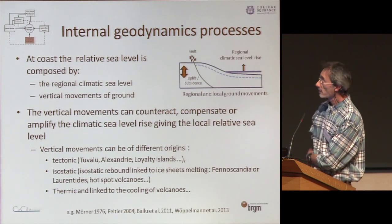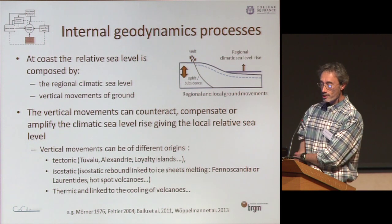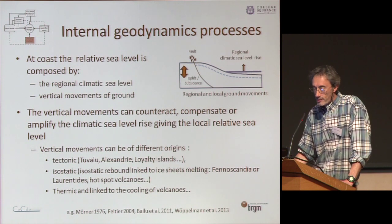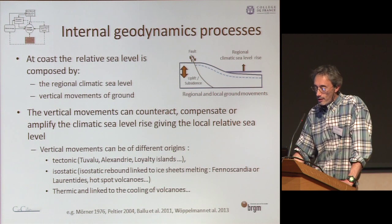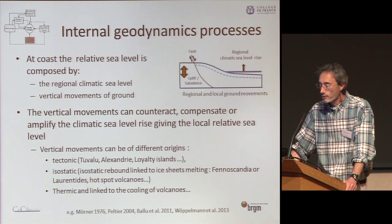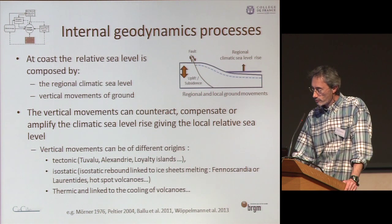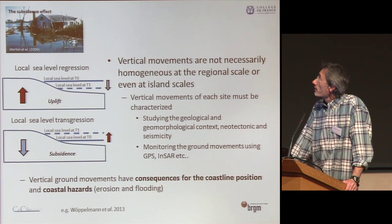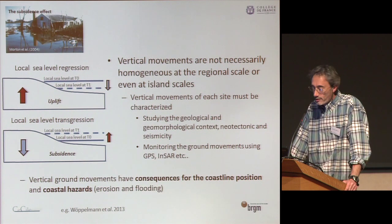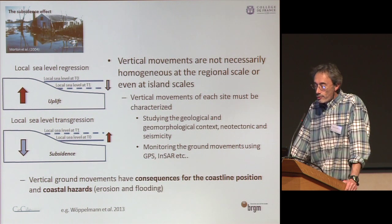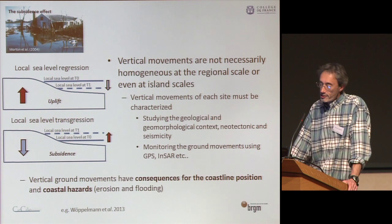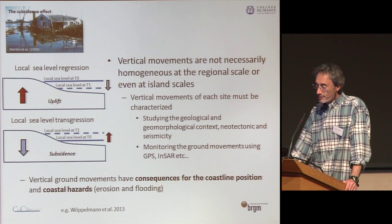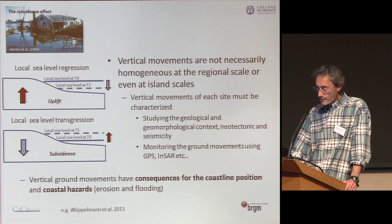Regarding internal geodynamic processes: at the coast, the relative sea level is composed of the regional climatic sea level and vertical movement of the ground. Vertical movement can counteract, compensate, or amplify the climatic sea level rise, giving the local relative sea level. Vertical movements are of various origin: tectonic, isostatic, thermic, and linked to the cooling of volcanoes. These movements are not necessarily homogeneous at the regional or island scale. Each site must be characterized in its geological and geomorphological context — neotectonics and seismicity — and monitored using GPS. Vertical ground movement has consequences for coastline position and coastal hazards such as erosion and flooding.